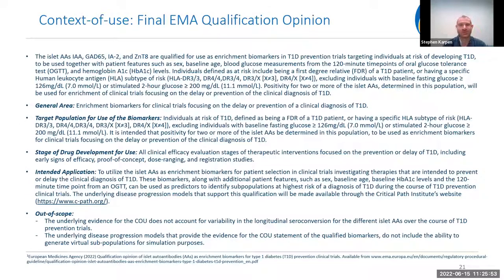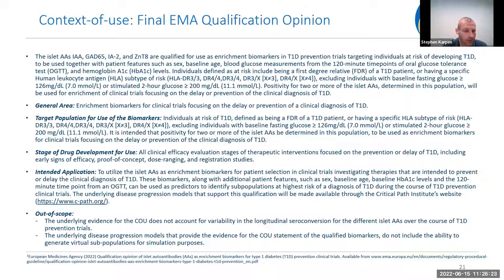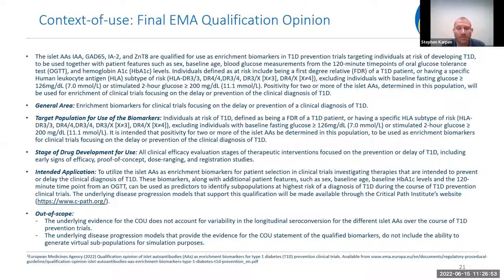The context of use is analogous to a drug label — it specifies how the tool is endorsed to be used, who it can be used in, and how to apply it per the EMA qualification opinion. It targets enrichment biomarkers for delay or prevention clinical studies and covers all clinical efficacy evaluation stages, including early efficacy, pivotal registration studies, proof of concept, and dose-ranging studies. Out of scope items include the longitudinal seroconversion of autoantibodies over time and generation of virtual subpopulations for simulations.